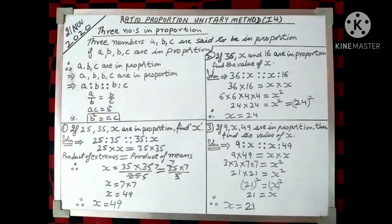This is the process we are going to follow in the given questions. See the first question: if 25, 35, x are in proportion, then find the value of x. So we will write 25, 35, 35, x. And then we will multiply 25 into x is equal to 35 into 35, because product of the extremes is equal to product of the means in proportion. Therefore, x is equal to 35 into 35 divided by 25. And we get the final answer as x is equal to 7 into 7, that is x is equal to 49.